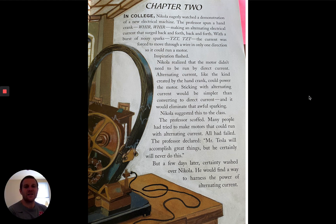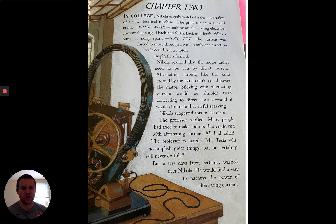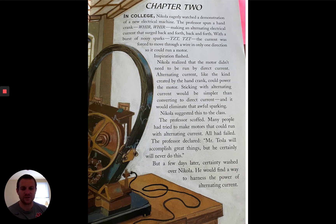Chapter 2. In college, Nikola eagerly watched a demonstration of a new electrical machine. The professor spun a hand crank — whirr, whirr — making an alternating electrical current that surged back and forth. With a burst of noisy sparks, the current was forced to move through a wire in only one direction so it could run a motor. Nikola realized that the motor didn't need to be run by direct current. Alternating current, like the kind created by the hand crank, could power the motor and would eliminate that awful sparking. The professor scoffed: 'Mr. Tesla will accomplish great things, but he certainly will never do this.' But a few days later, certainty washed over Nikola — he would find a way to harness the power of alternating current.